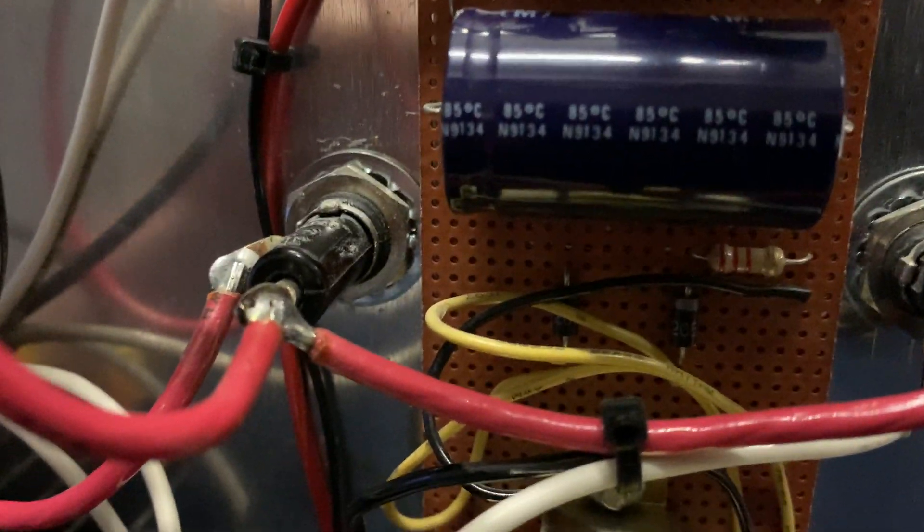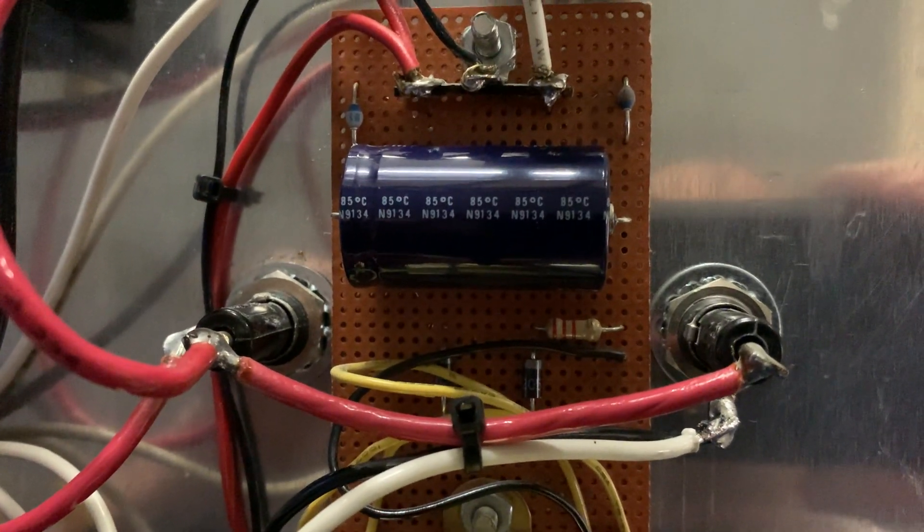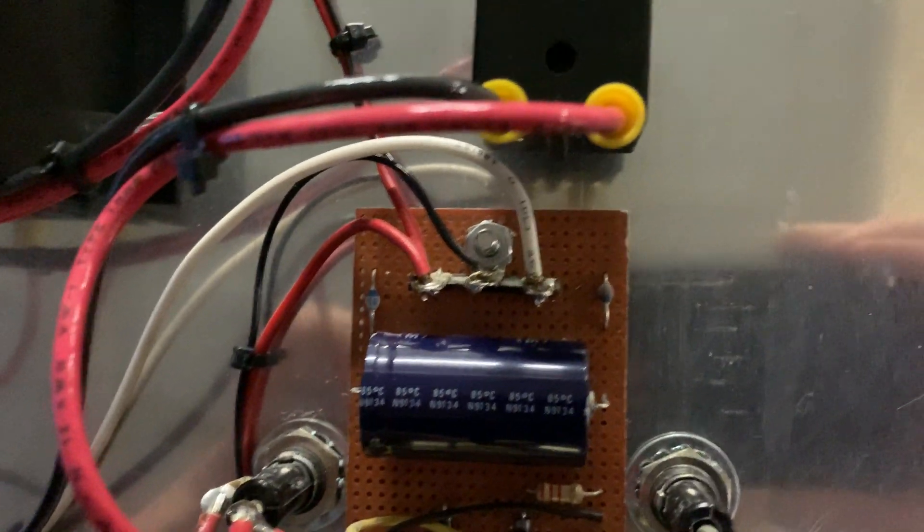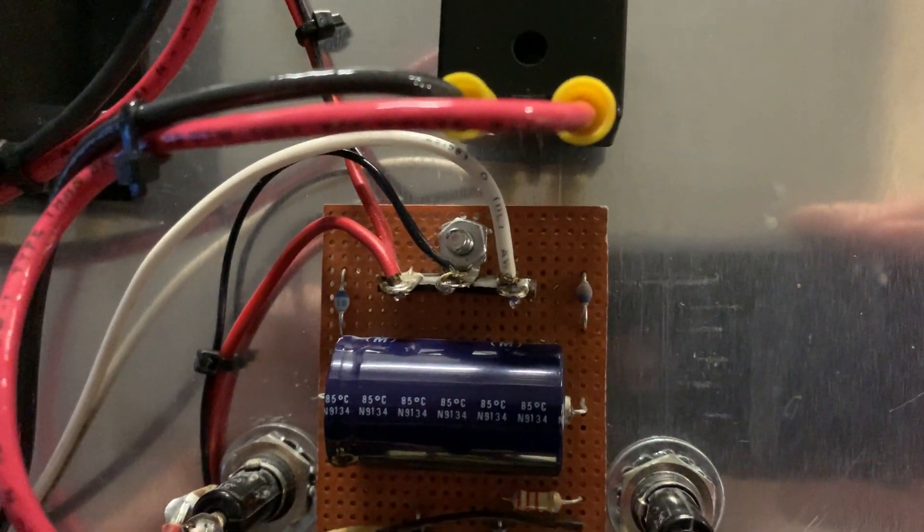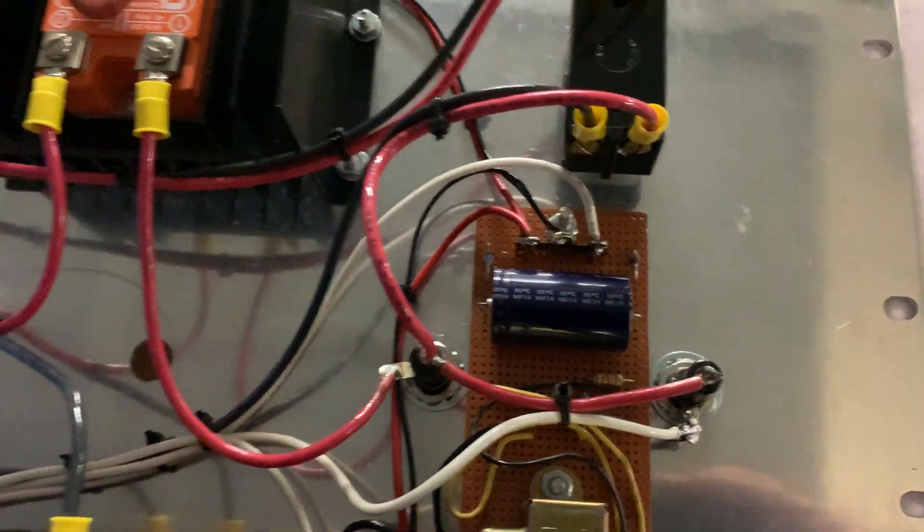So the main diodes are down underneath there, see? Then I have a, like a, what is that, 2.2K bleeder? I can't tell what that is. Looks like it. Something similar. And then there's two diodes on the output right before. There's a reason why I'm doing that. There's a reason why.